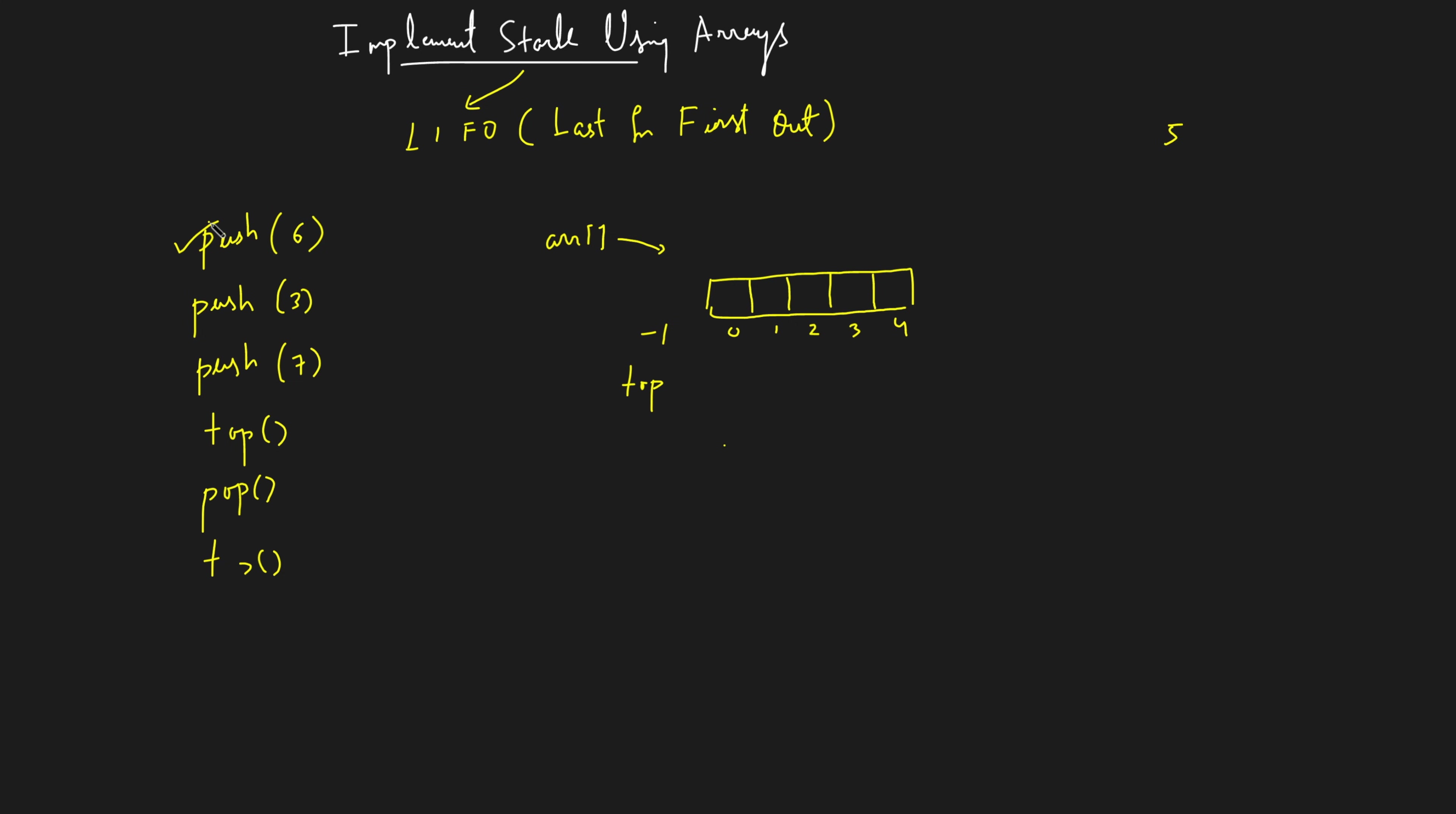So now let's start the operation. Whenever someone says push 6, what you'll do is you'll take the top and you'll increment it to the next index, that is top equal to top plus 1. Once you have done that, you take the element over here 6 and you put it into your zeroth index, so it goes and gets into the zeroth index. So push operation is done.